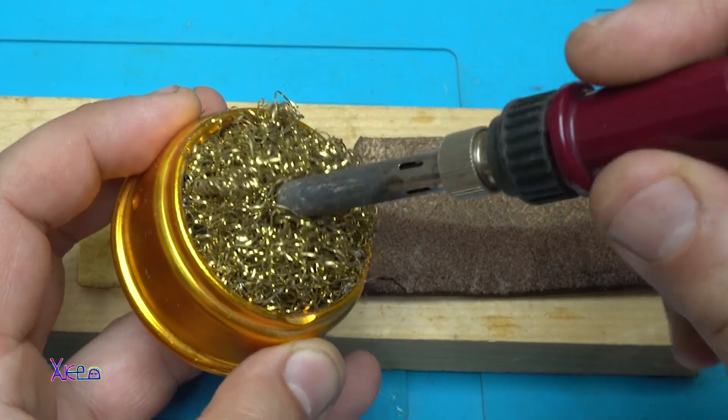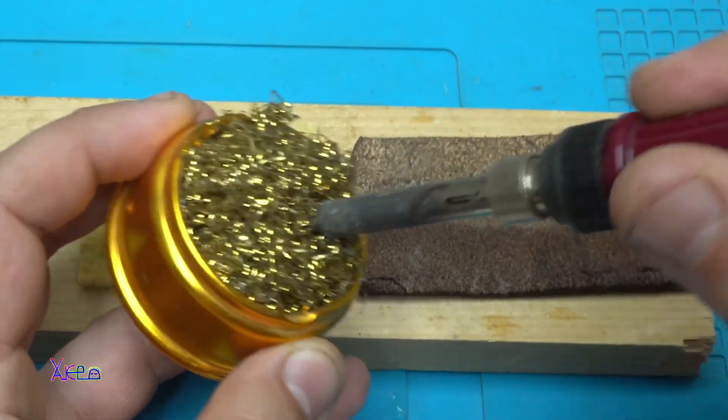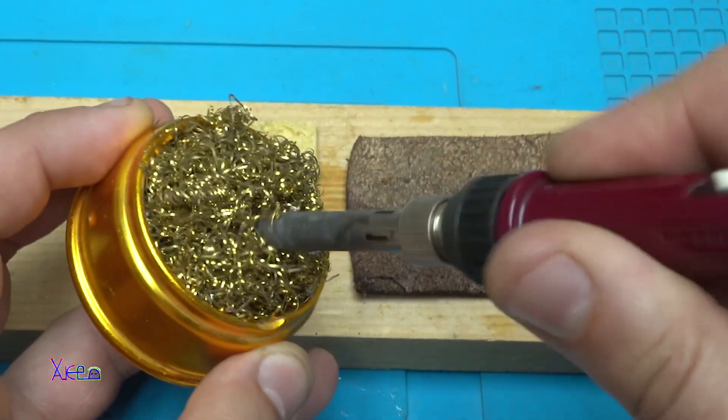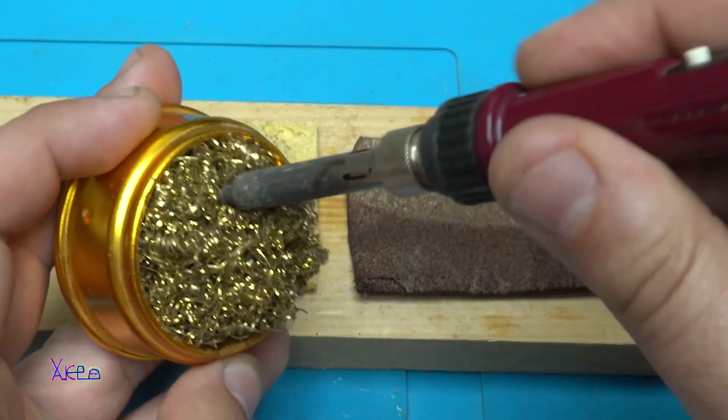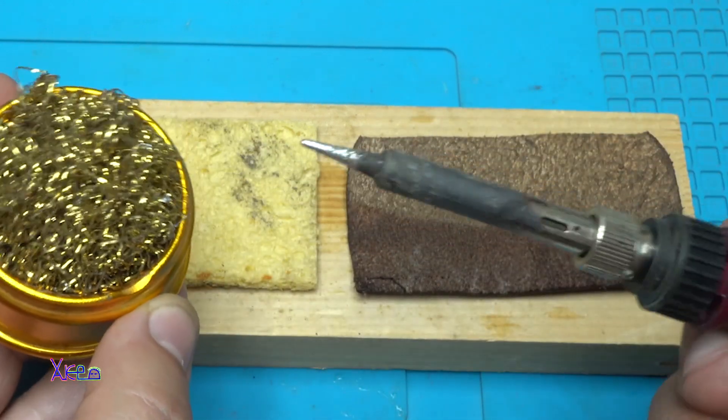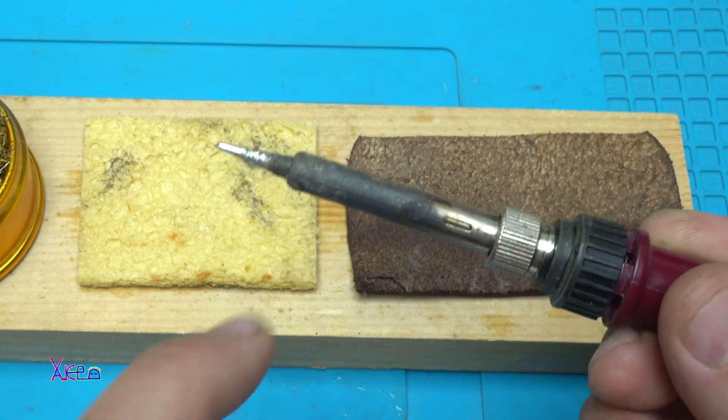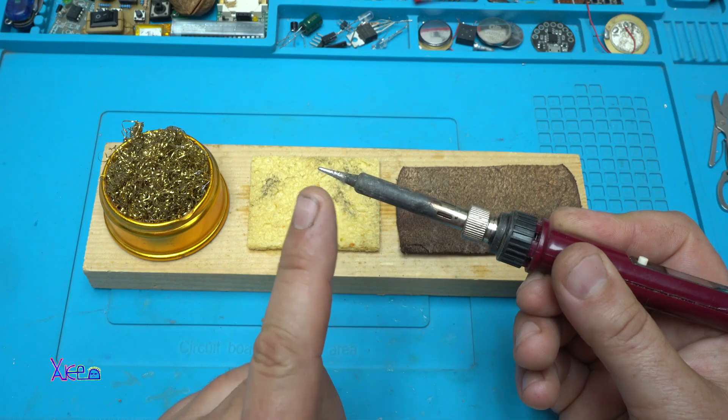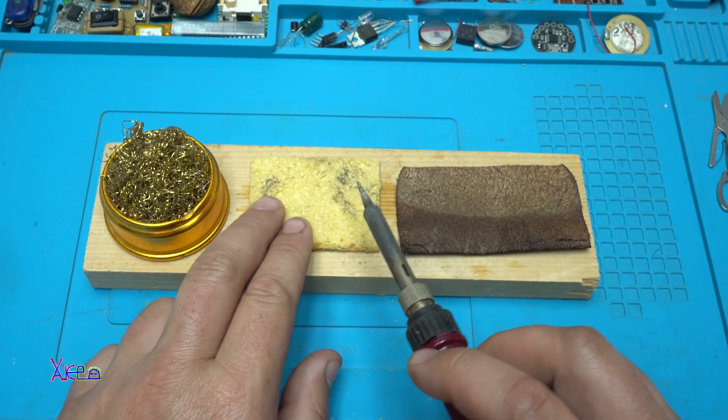You take the soldering iron and just make this into the metal sponge. You think that it's clean, but not. Second step, go to the wet sponge.